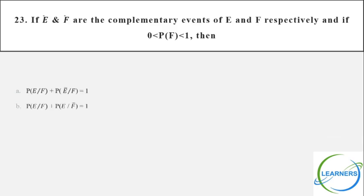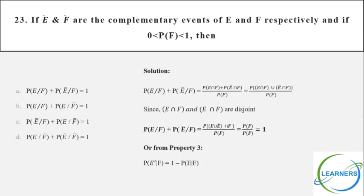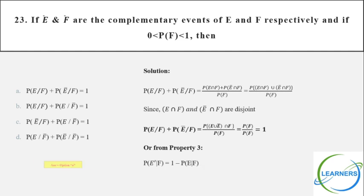This one is based on a chord property. E-bar means E-dash. E-bar and F-bar are the complementary events of E and F respectively. If the probability of F is between 0 and 1, the first condition is nothing but property 3: P(E'|F) = 1 − P(E|F). Bringing the terms to one side, their sum becomes 1. Option A.